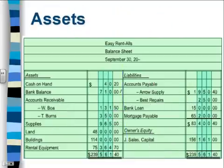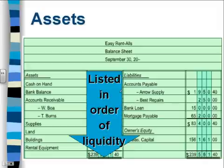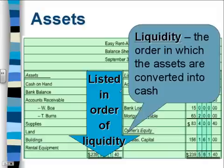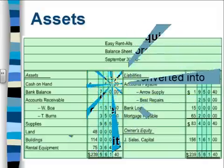Let's talk about the assets first. Assets are listed in order of liquidity, and we talked about liquidity already. Liquidity is the order in which the assets are converted into cash.